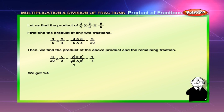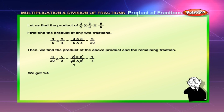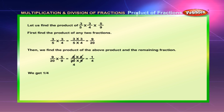Product of more than 2 fractions: Let us find the product of 3 by 5 into 3 by 4 into 5 by 9. First, find the product of any two fractions: 3 by 5 into 3 by 4 equals 3 into 3 by 5 into 4, which is equal to 9 by 20. Then, we find the product of that result and the remaining fraction: 9 by 20 into 5 by 9 equals 9 into 5 by 20 into 9, which is equal to 1 by 4.